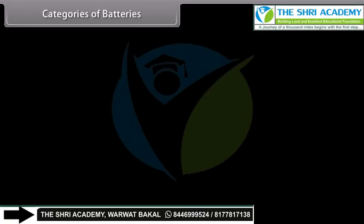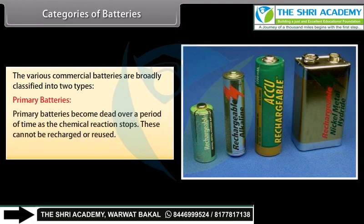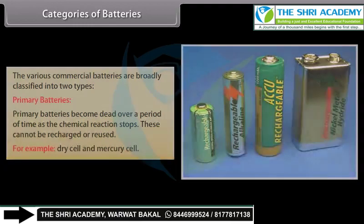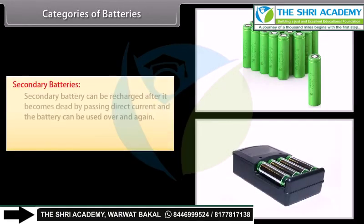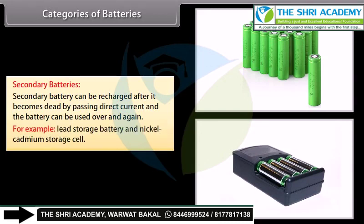Various commercial batteries are broadly classified into two types. Primary batteries become dead over a period of time as the chemical reaction stops; these cannot be recharged or reused — for example, dry cell and mercury cell. Secondary batteries can be recharged after they become dead by passing direct current and can be used over and again — for example, lead storage battery and nickel cadmium storage cell.